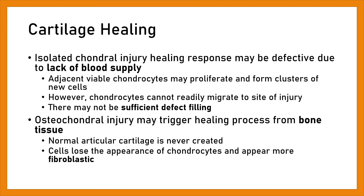Cartilage healing: Isolated chondral injury healing response may be defective due to lack of blood supply. Adjacent viable chondrocytes may proliferate and form clusters of new cells; however, chondrocytes cannot readily migrate to the site of injury. There may not be sufficient defect filling. Osteochondral injury may trigger the healing process from bone tissue, but normal articular cartilage is never recreated. Cells lose the appearance of chondrocytes and appear more fibroblastic.